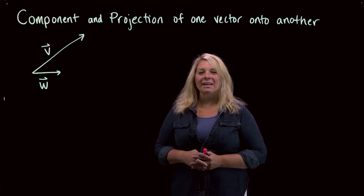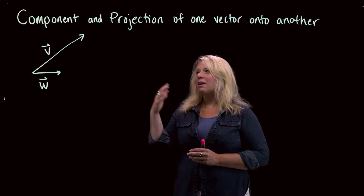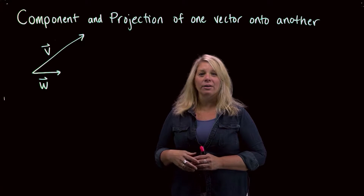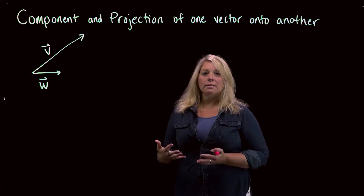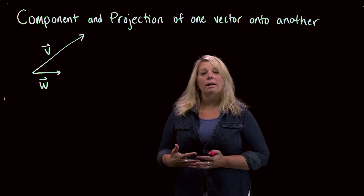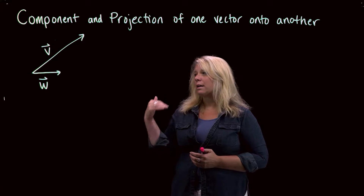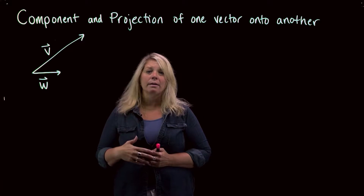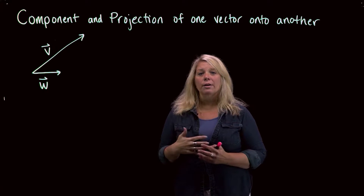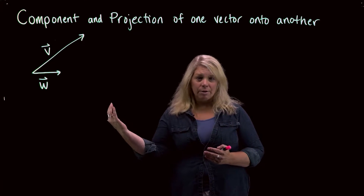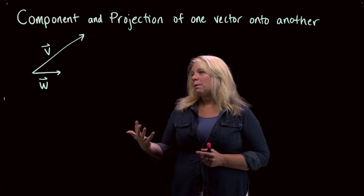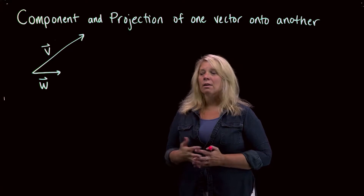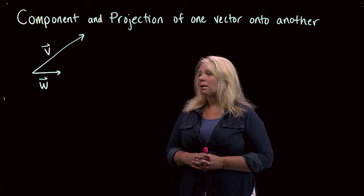In this video we're going to look at what are called the component and the projection of one vector onto another. This is something that's used a lot in physics, for example, when we're trying to determine how much one vector lines up with another — for example, a force vector aligned with the direction of motion would be one of the applications of this.